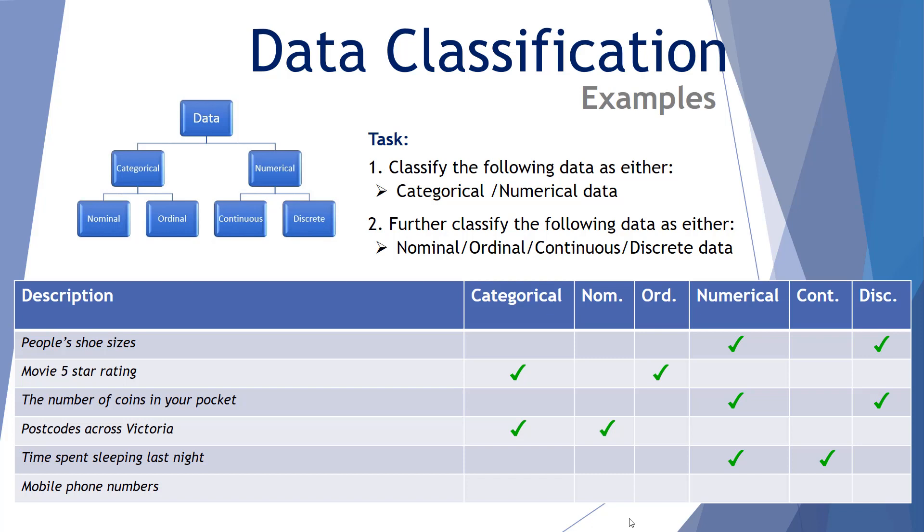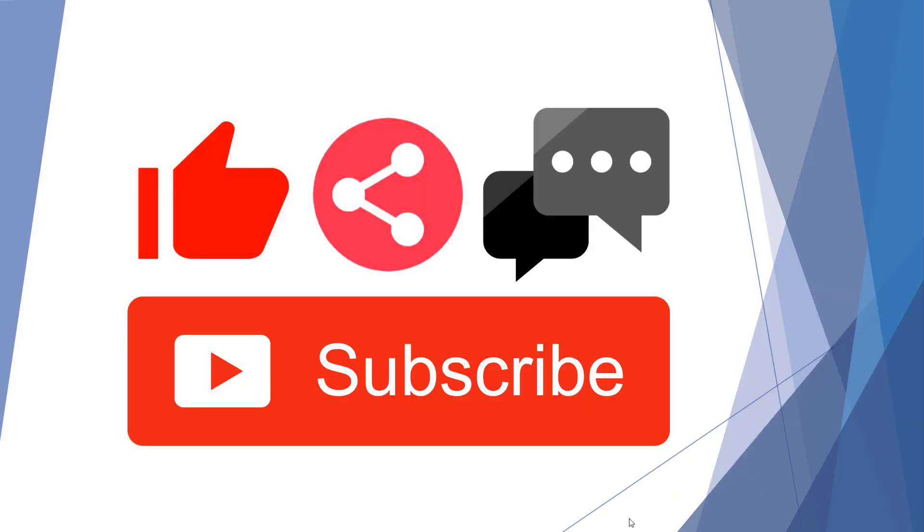Finally, mobile phone numbers. We appreciate now that a mobile phone number, whilst it involves numbers, is in fact categorical and it's nominal. Thanks for watching this video. I hope it's provided some clarity in terms of data classification, both in categorical and numerical data, and further below that into nominal and ordinal data, as well as discrete and continuous data. If you've learned something from this, please like, share, comment, and subscribe. And as always, thanks for watching.